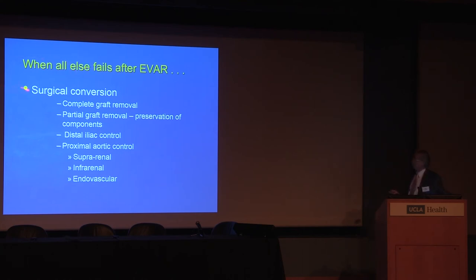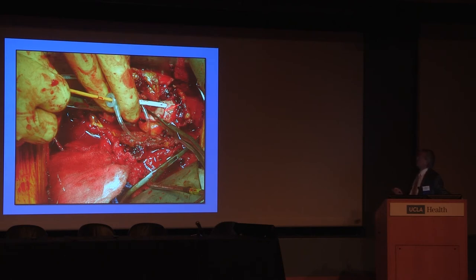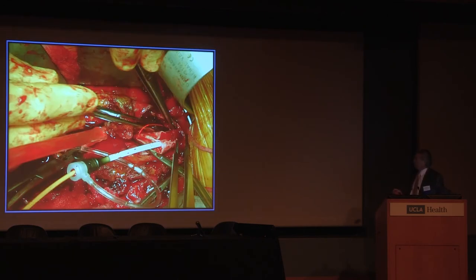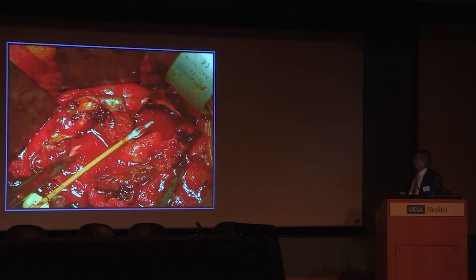When all else fails, you have surgical conversion — complete or partial graft removal. You usually don't need distal iliac control because you can control the limbs from inside the aneurysm. A useful trick: you don't need to expose the suprarenal aorta. You can puncture the graft and place an aortic occlusion balloon, allowing you to remove the device without having to clamp the aorta. Here you can see the device being removed with suprarenal control, and then the aorta is cross-clamped as in a standard repair.